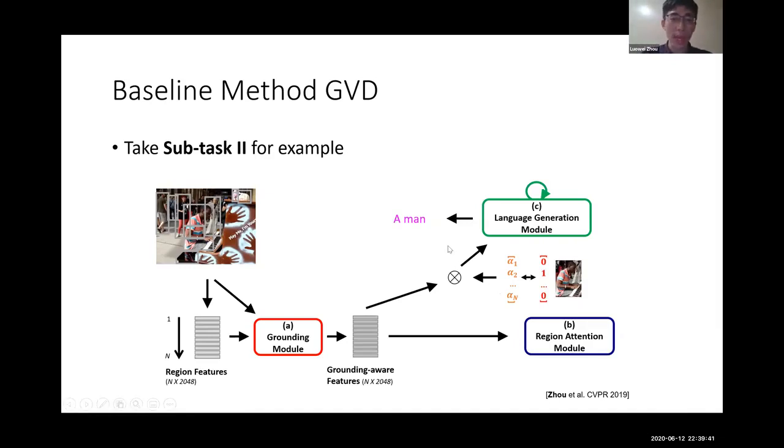The reference will be a binary vector. We apply cross entropy loss between the prediction attention weights and the ground truth attention weights.